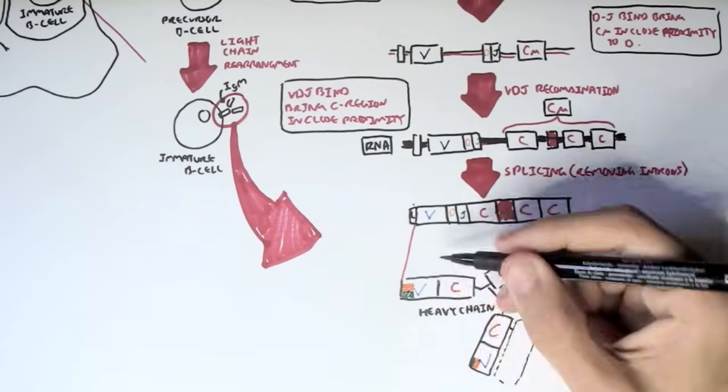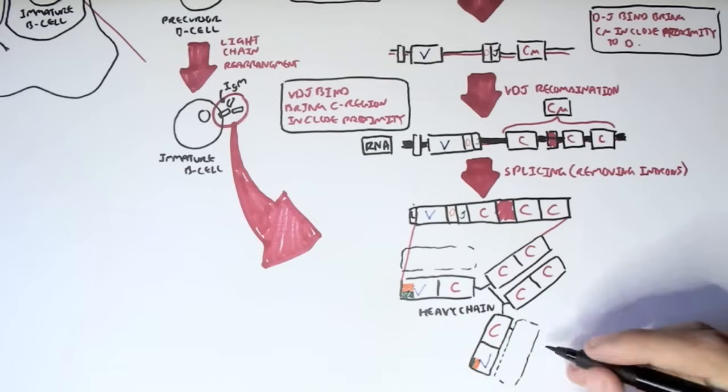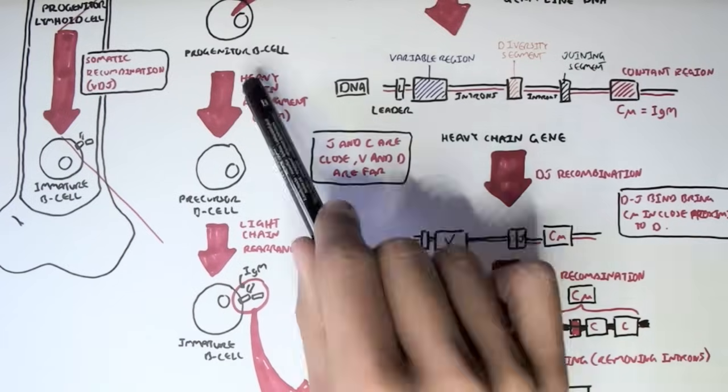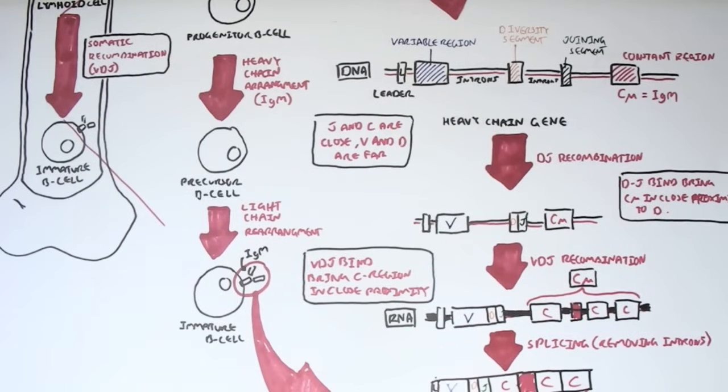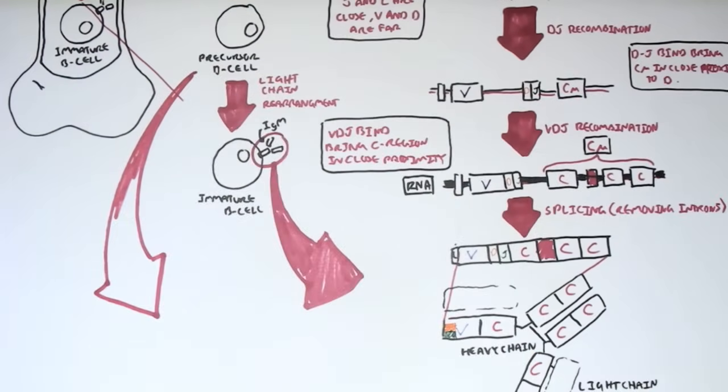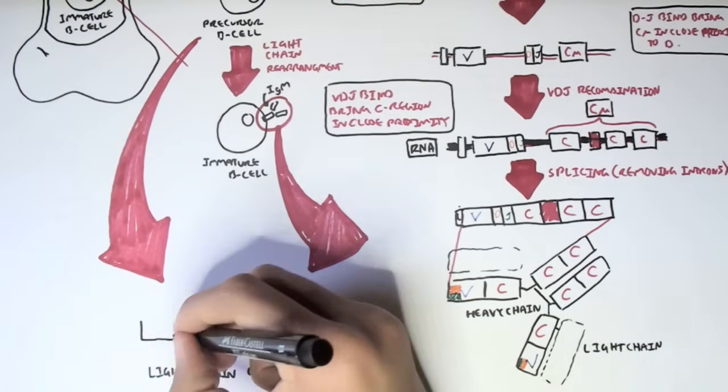But how about the light chains, because we don't have the light chains yet? Well, after the heavy chain recombination has occurred, we get a precursor B cell. And in the precursor B cell, we have a gene for the light chain. And so the light chain gene can undergo somatic recombination, V, J recombination. So in the precursor B cell, we have the light chain gene.